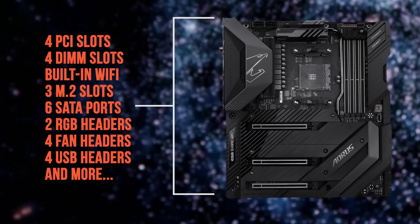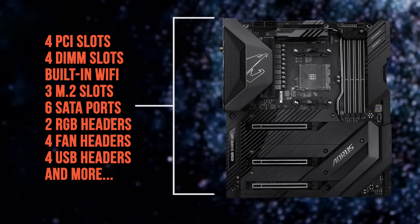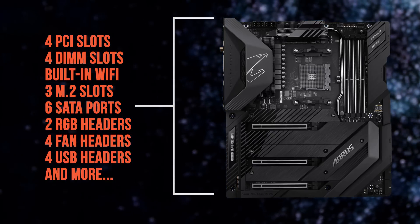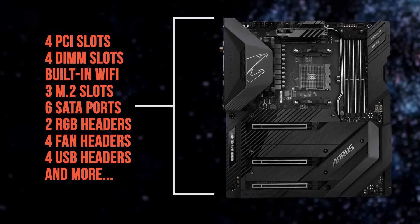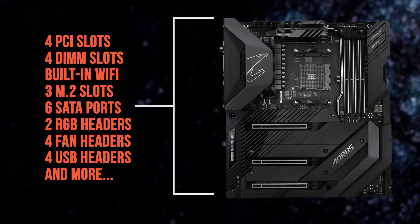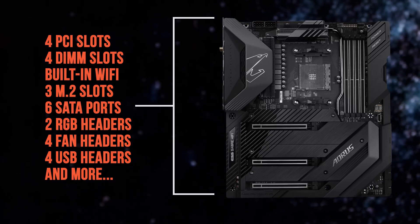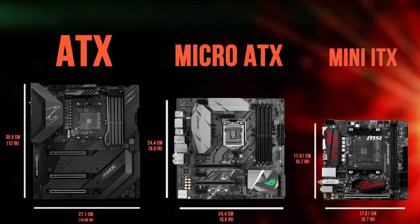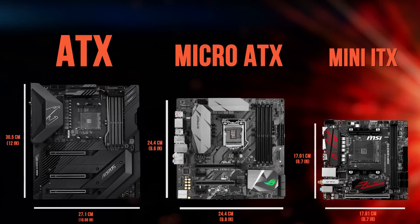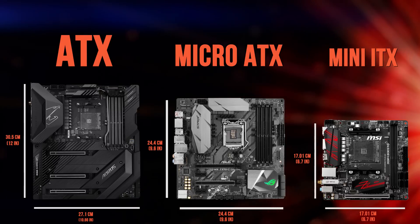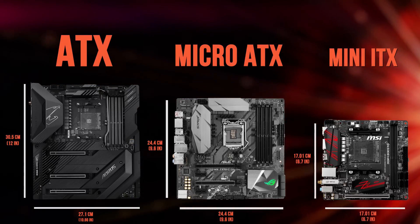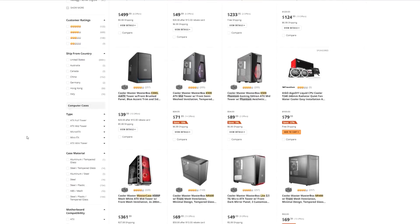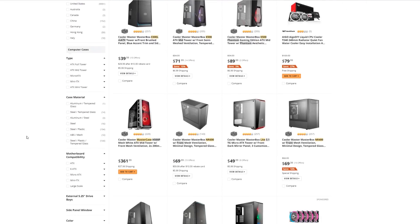Generally speaking, the larger the motherboard's physical size, the more components it will support. Use the size of your planned PC and the components you want to install as guides to choose your motherboard form factor. The ATX form factor is the most common for PC building, but Micro ATX and Mini ITX are options for more compact builds. Not all cases support all form factors, so check the product pages for both your case and your motherboard to make sure that they are compatible.